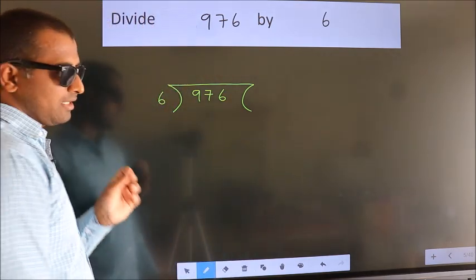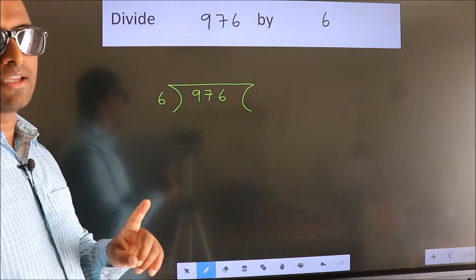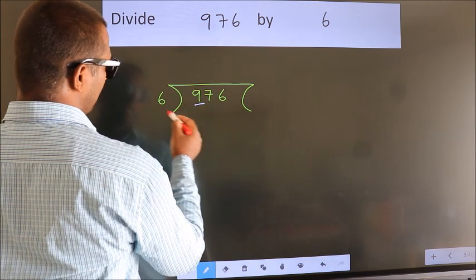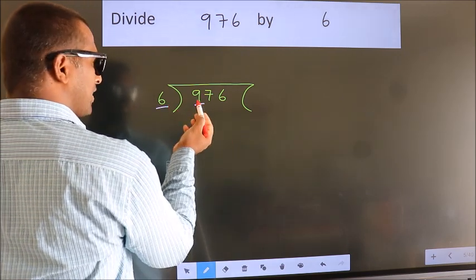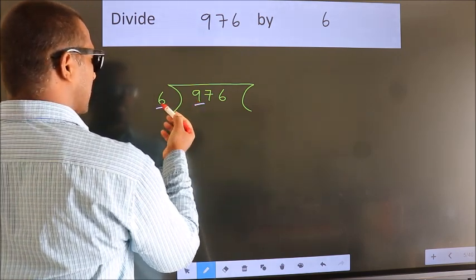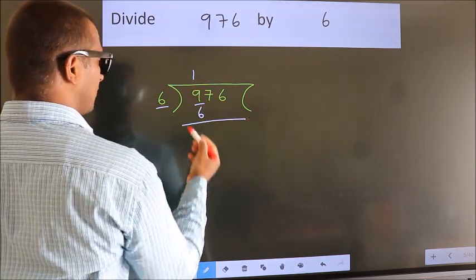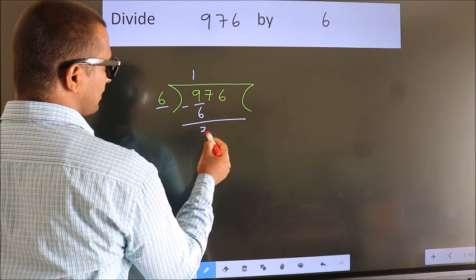This is your step 1. Next, here we have 9, here 6. A number close to 9 in 6 table is 6 once 6. Now we should subtract. We get 3.